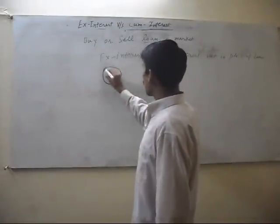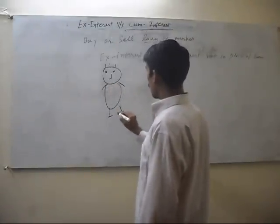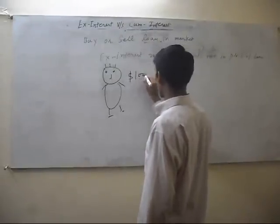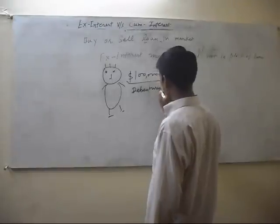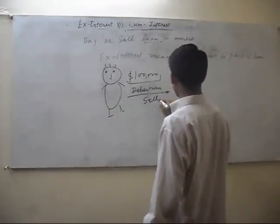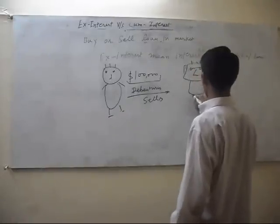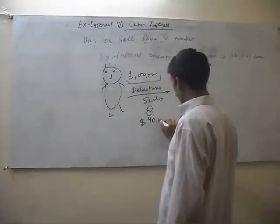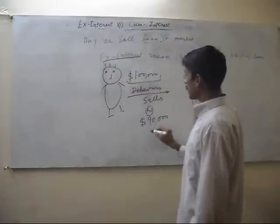This is a man who has $100,000 debentures. He sells this to this person at $90,000. Now, if this dealing is Ex-Interest,